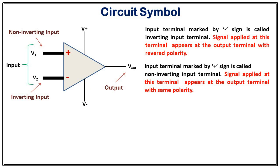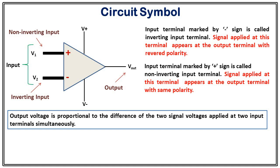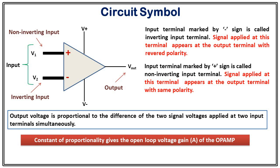But what will happen if you apply two signals simultaneously? If you apply two voltages at two different terminals, then in that scenario the output voltage is proportional to the difference of the two voltages applied at the two input terminals simultaneously. That is, if you apply V1 at the non-inverting terminal and V2 at the inverting terminal, then V_out must be proportional to V1 minus V2. We must have a proportionality factor, and that constant of proportionality gives the open loop gain, which is generally denoted by A. We call it open loop gain because if you use an op amp simply without making any feedback loop, in that scenario the op amp has a gain and that gain is called open loop gain. Therefore we must write: V_out = A × (V1 − V2), where A is the open loop gain.